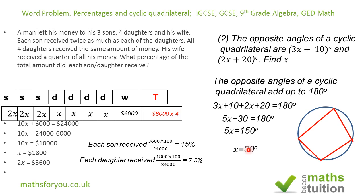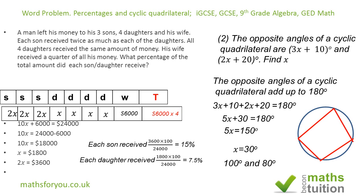Substituting x = 30 back: 3 times 30 is 90, plus 10 gives 100 degrees. And 2 times 30 is 60, plus 20 gives 80 degrees. Our angles are 100 degrees and 80 degrees respectively. I hope that made sense — please subscribe and thank you for watching.